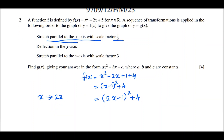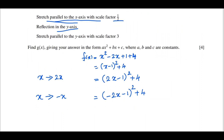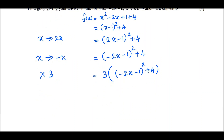The next transformation is a reflection in the y-axis. Reflection in the y-axis means x is replaced by negative x, so we get (-2x - 1)² + 4. The third transformation is a stretch parallel to the y-axis with scale factor 3, so the whole expression is multiplied by 3: g(x) = 3[(-2x - 1)² + 4].